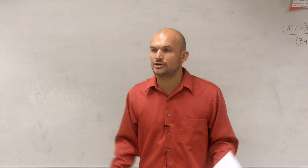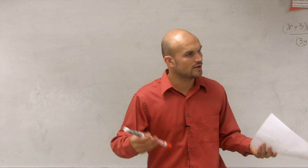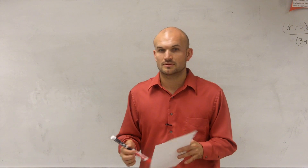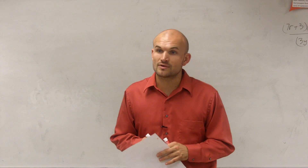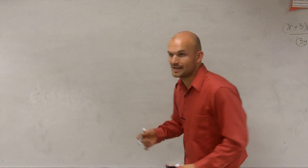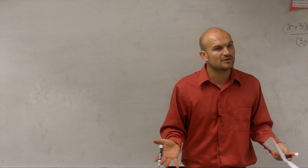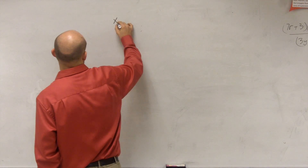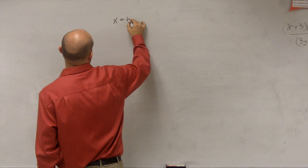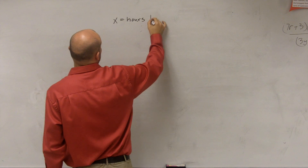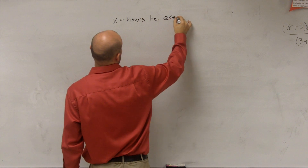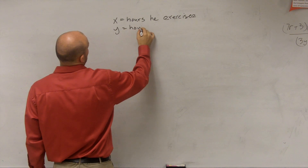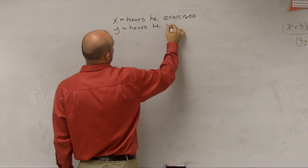What we need to do is determine what are our unknowns — what is it we don't know, what are we trying to solve for? We don't know the hours he exercises or the hours he writes his novel. So we'll create a variable for each one: x equals the hours he exercises, and y equals the hours he writes.